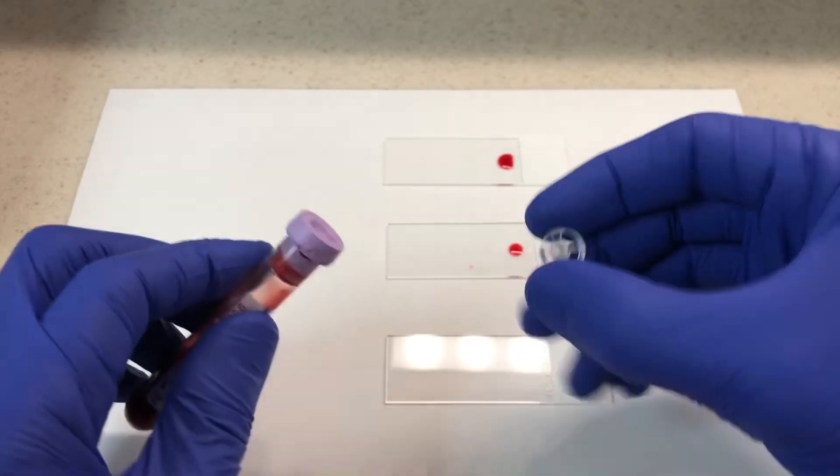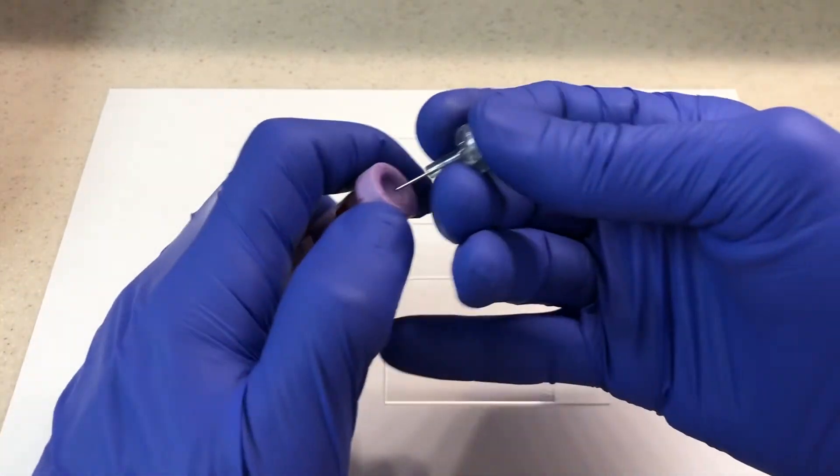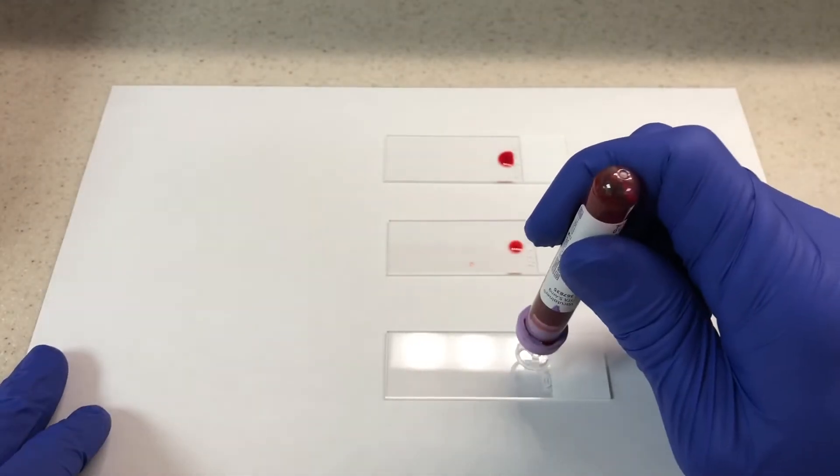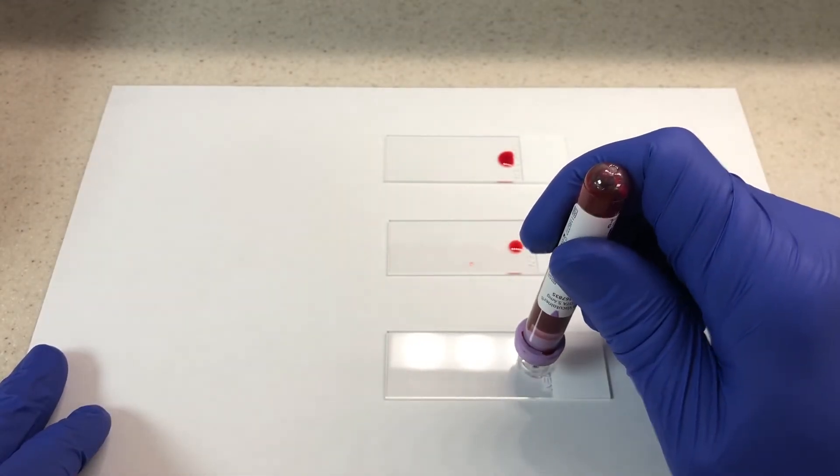And then probably the most common at least from the facilities I've worked at is a blood dispenser that just pierces through the rubber portion of the top of the tube and then pressing down you can make a drop.